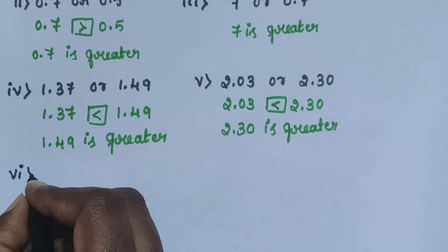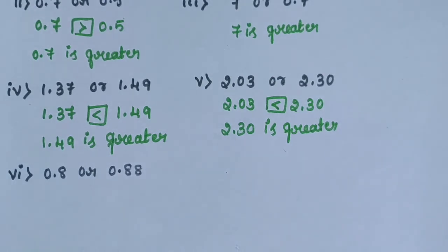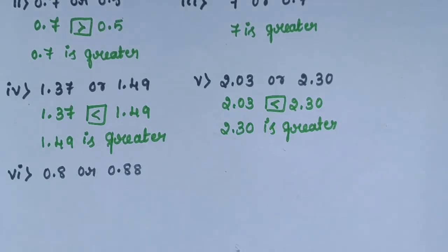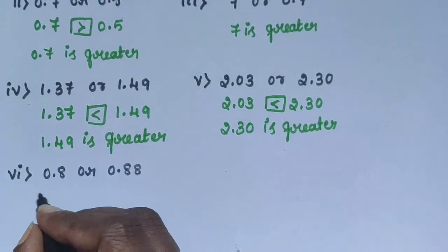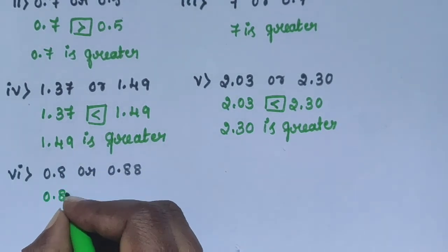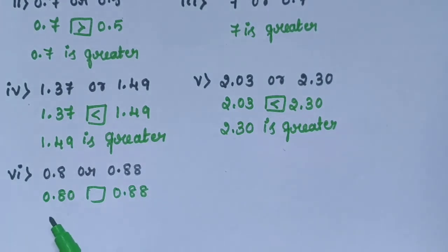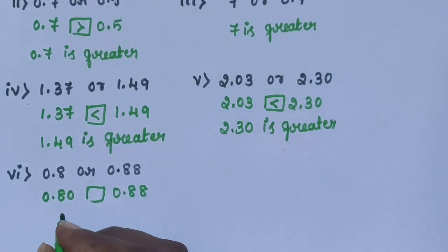Sub-question 6: 0.8 or 0.88. Compare these two decimal numbers. Units place is 0 and 0, same. Next decimal part: tenths place is 8 and 8, same. Then compare the hundredths place — 0.8 has no hundredths digit, but 0.88 has 8. Therefore, 0.88 is the greatest number. 0.88 is greater.